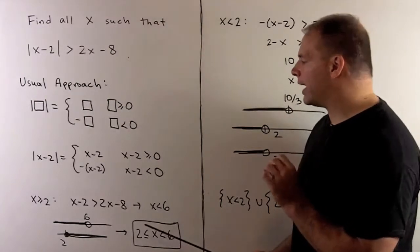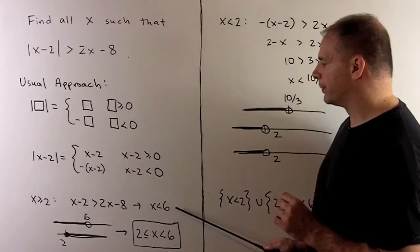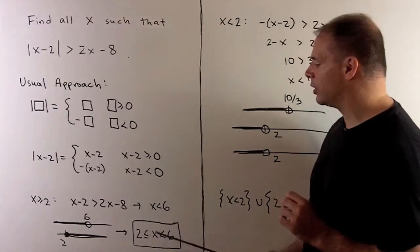I want to know, for what x do we have x greater than or equal to 2 and strictly less than 6. So we'll get all x that's between 2 and 6, including the 2.